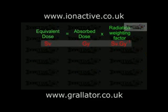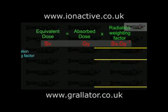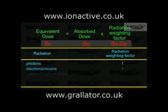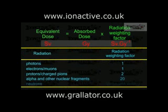The unit of equivalent dose is the sievert. To obtain an equivalent dose of one sievert requires an absorbed dose of one grey of gamma radiation, one grey of beta radiation, or one twentieth of a grey of alpha radiation, as alpha radiation is 20 times more damaging.